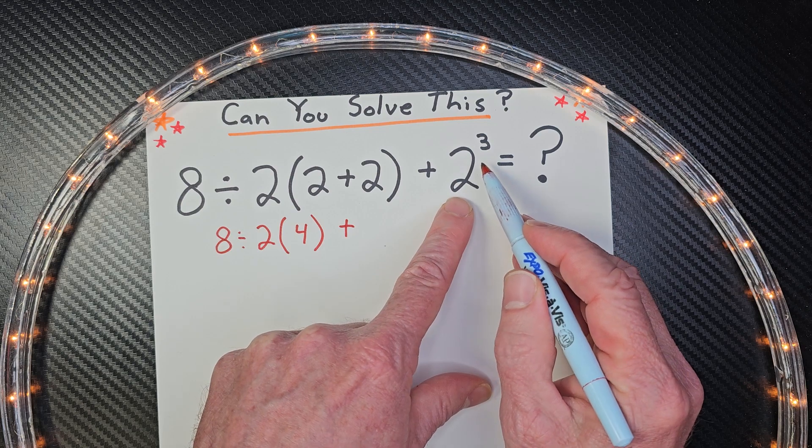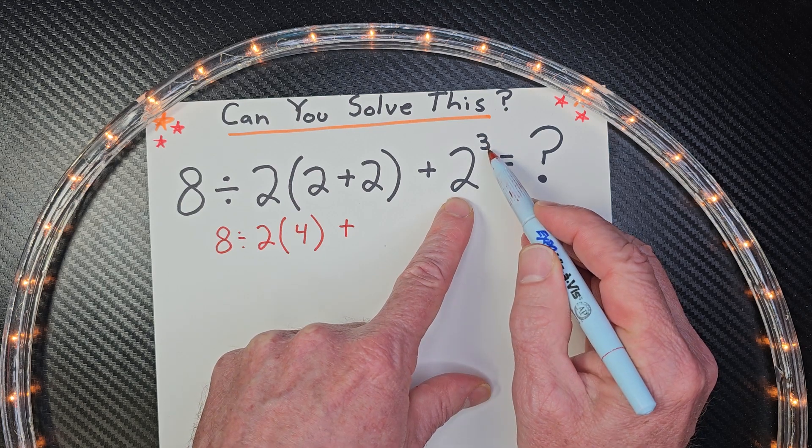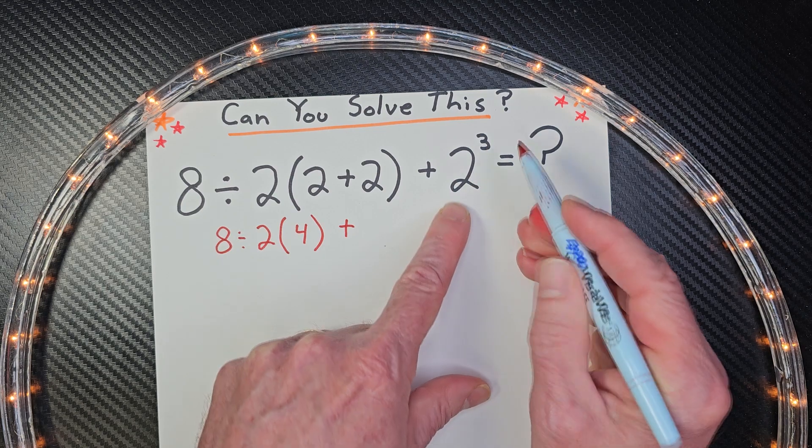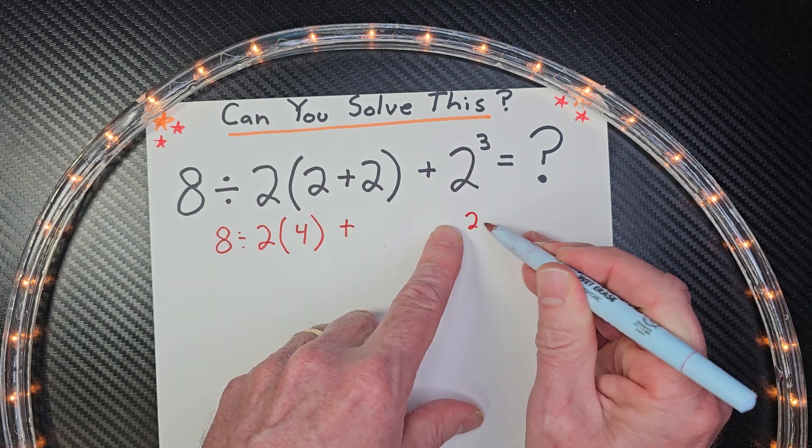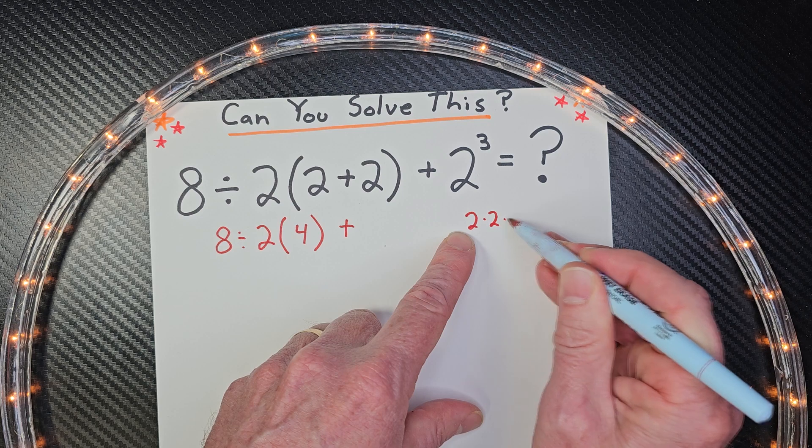Now, if you're not familiar with exponents, this right here tells you how many times you're going to multiply this number right here. So I'm going to take it three times. I'm going to take 2, 2 times 2 times 2.